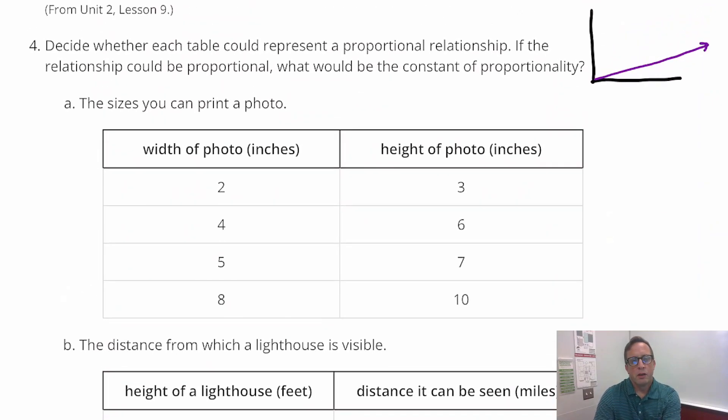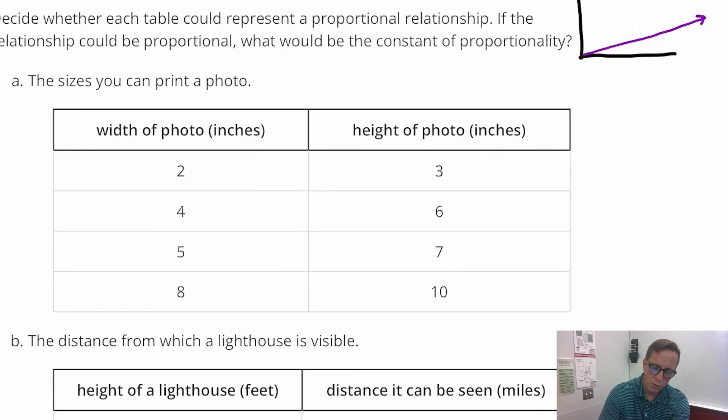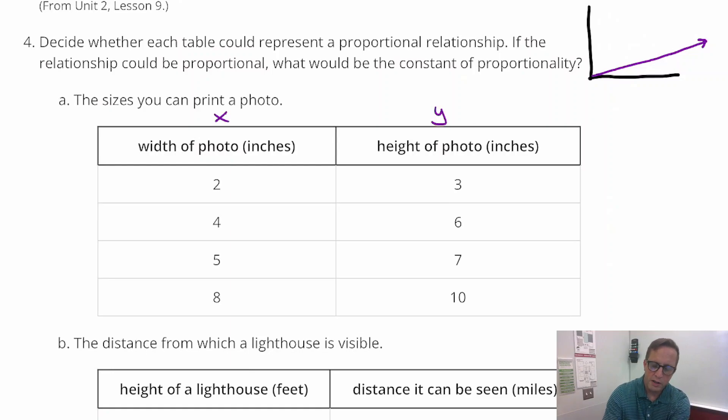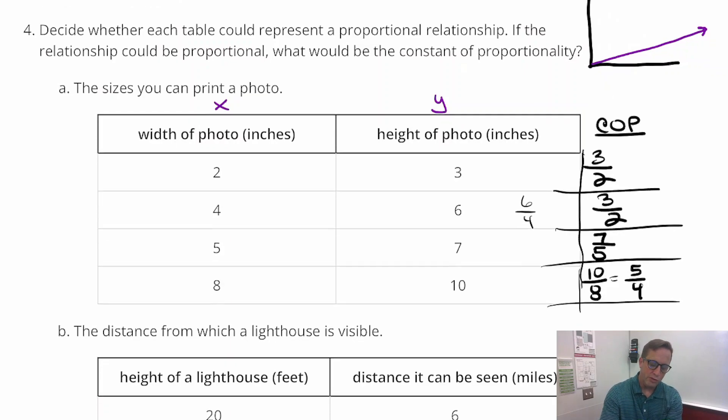Number four, decide whether each table could represent a proportional relationship. If the relationship could be proportional, what could be the constant of proportionality? So I'm just going to do the basic X and Y thing here and just divide. So you got constant of proportionality is going to be 3 over 2, 3 divided by 2. This one comes out to 6 over 4, which reduces to 3 over 2. Holy cow, it's got to be it. But you know what, this is a good example here. This is a good example of why you need to check all of them. We should really be thorough and persistent and check all these things. But this becomes 7 over 5, which is not 3 over 2. This becomes 10 over 8, which reduces to 5 over 4, which again is not 3 over 2. So that is not proportional.